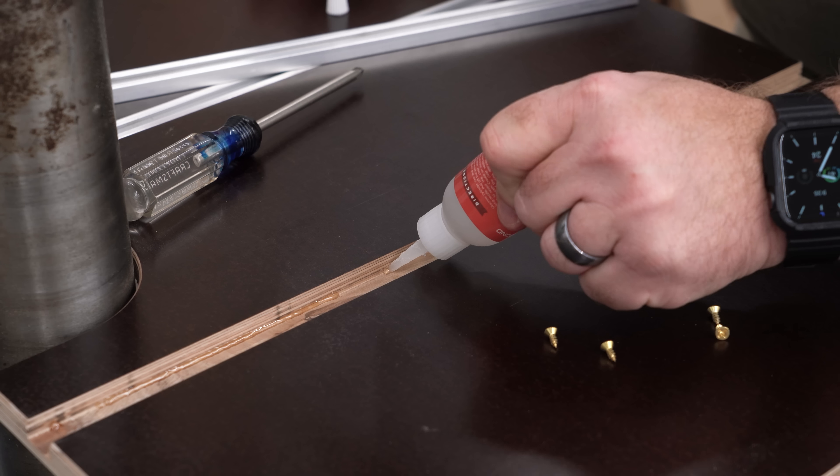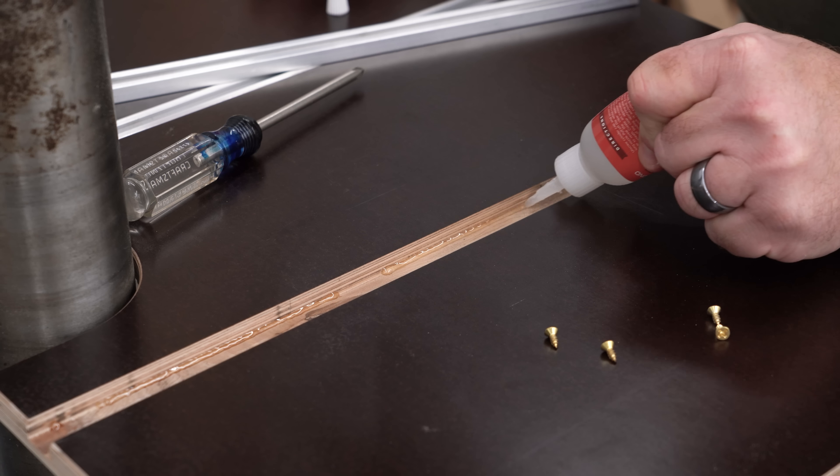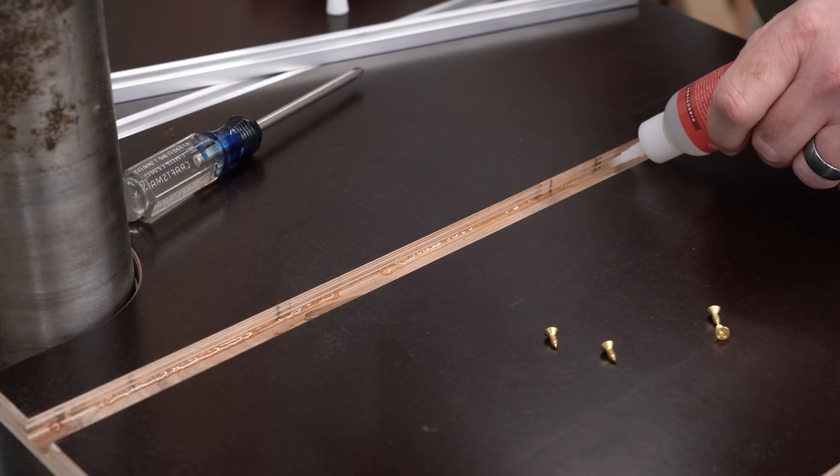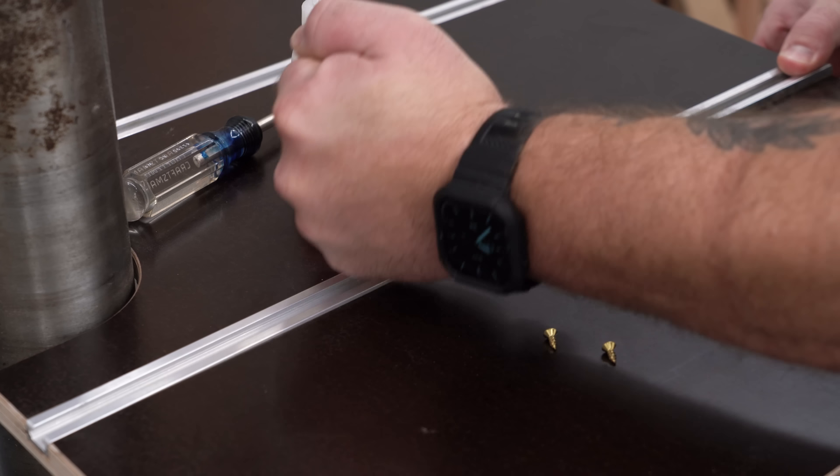An easy fix is to add some five minute epoxy or thick CA, also known as super glue, into the grooves before installing it to help keep things where they're supposed to be.